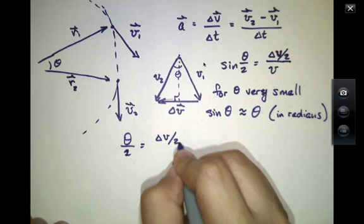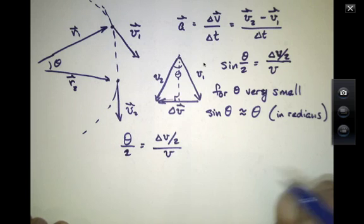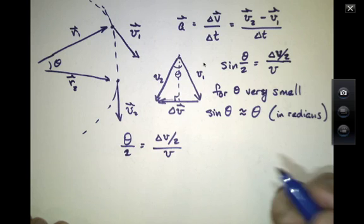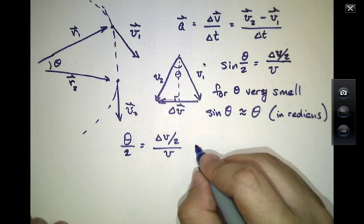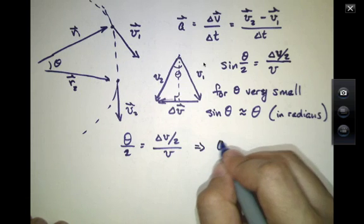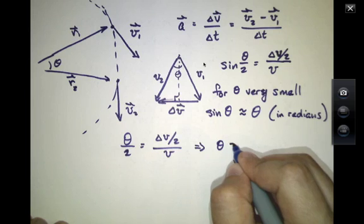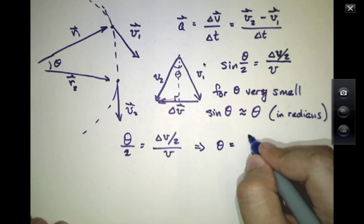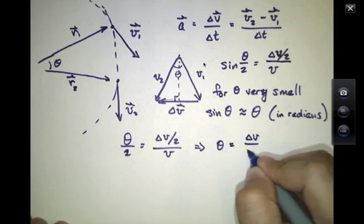And as a result, I can take this equation right here and rewrite it as theta over 2 is delta V over 2 over V. Or I can write that as theta equals delta V over V.